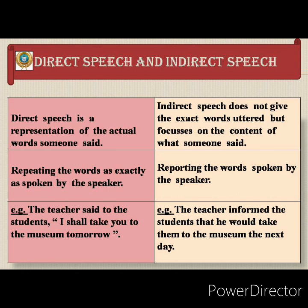Direct speech has some rules. After 'said to the students' — or said, replied, asked — a comma is placed. Then the statement is given within quotation marks. The exact words spoken by the speaker are repeated. Example: the teacher said to the students, comma, open quotation, 'I shall take you to the museum tomorrow,' close quotation and full stop.